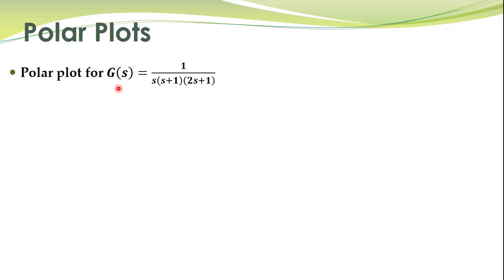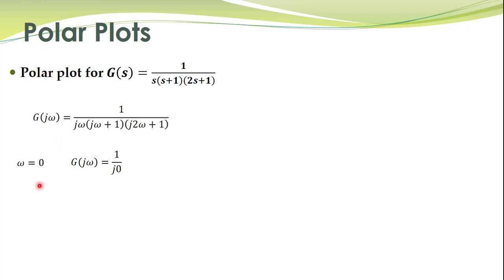So the transfer function is given here. Its frequency response is obtained by substituting s equal to j omega. We then determine a few points. The simplest choice is omega equal to zero. For omega equal to zero, this term becomes zero, so we have 1 multiplied by 1 and the remaining term evaluated at omega equal to zero.